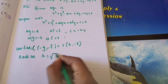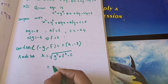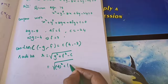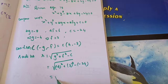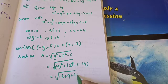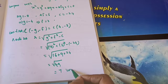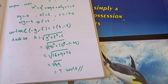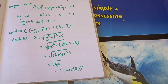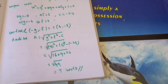Radius r equals square root of g square plus f square minus c. Substituting: square root of minus 4 square plus 3 square minus of minus 24, which equals square root of 16 plus 9 plus 24, equals square root of 49, equals 7 units. Don't forget to write the unit for radius, otherwise marks will be deducted. This section is easy, but you must learn all the formulas separately.